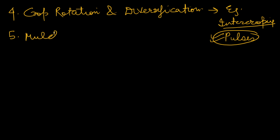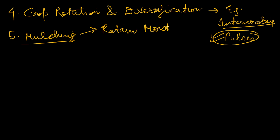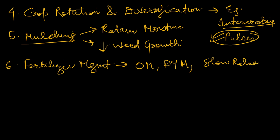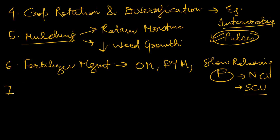We can do mulching, which has a huge effect on two things: first, to retain moisture in the soil, and second, to reduce weed growth. We also need proper fertilizer or nutrient management. We should focus on organic manures and farm yard manures. If using chemical fertilizers, we can look for slow-releasing fertilizers such as neem-coated urea, golden urea, or sulfur-coated urea for better efficiency.